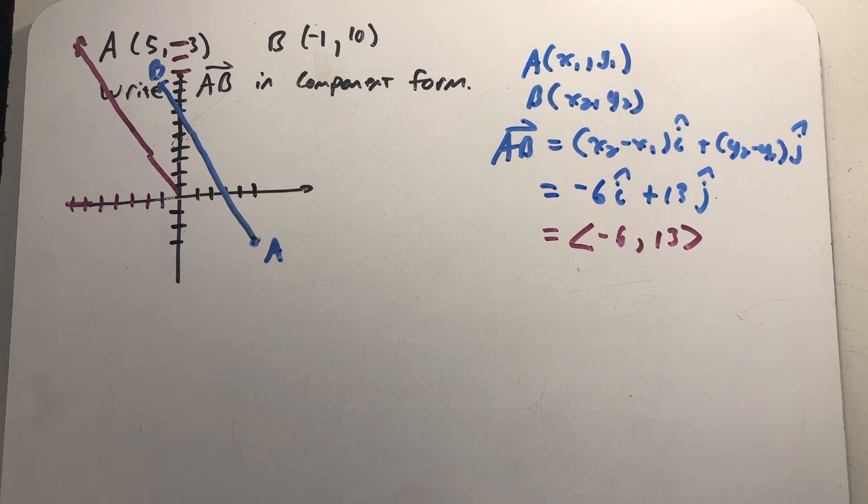And when we write this vector down like this, we're actually thinking about this like a recipe that if I gave you any point, we could sketch the vector by going to the left 6 and up 13, and have created that equal vector.